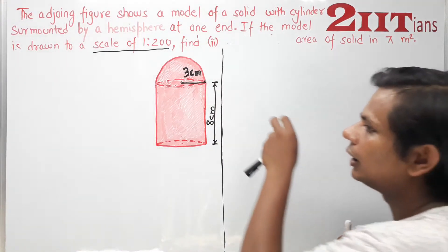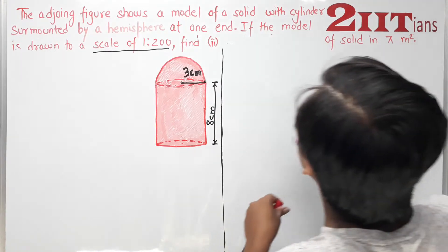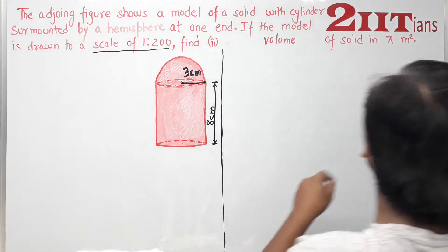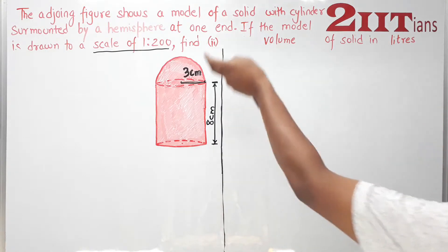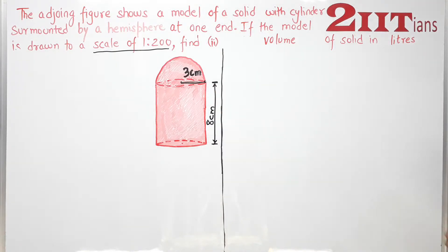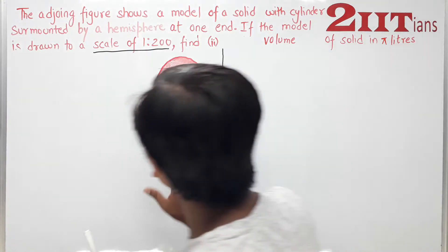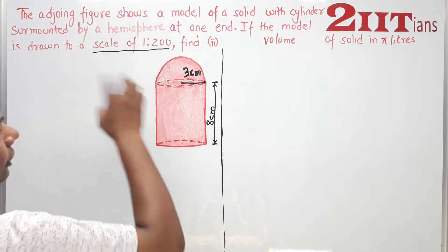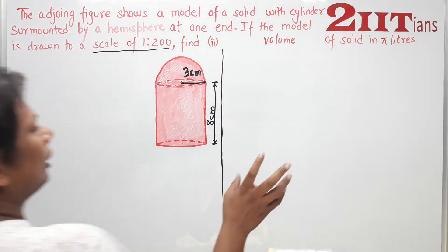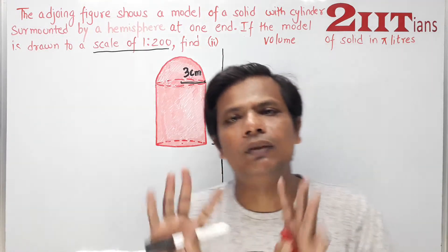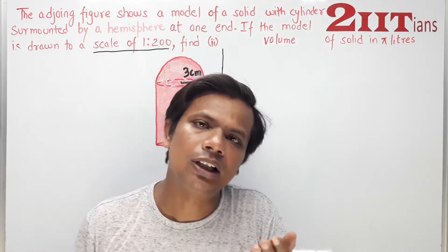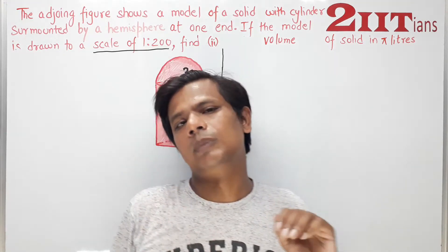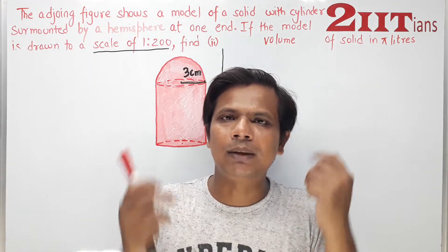In the second part, we will find the volume of the solid in liters. The strategy is: first get the volume of the model in cm³, then convert from the model to the actual solid using the scale factor, and finally convert from cm³ to m³ to liters. Pause and think through the process yourself.